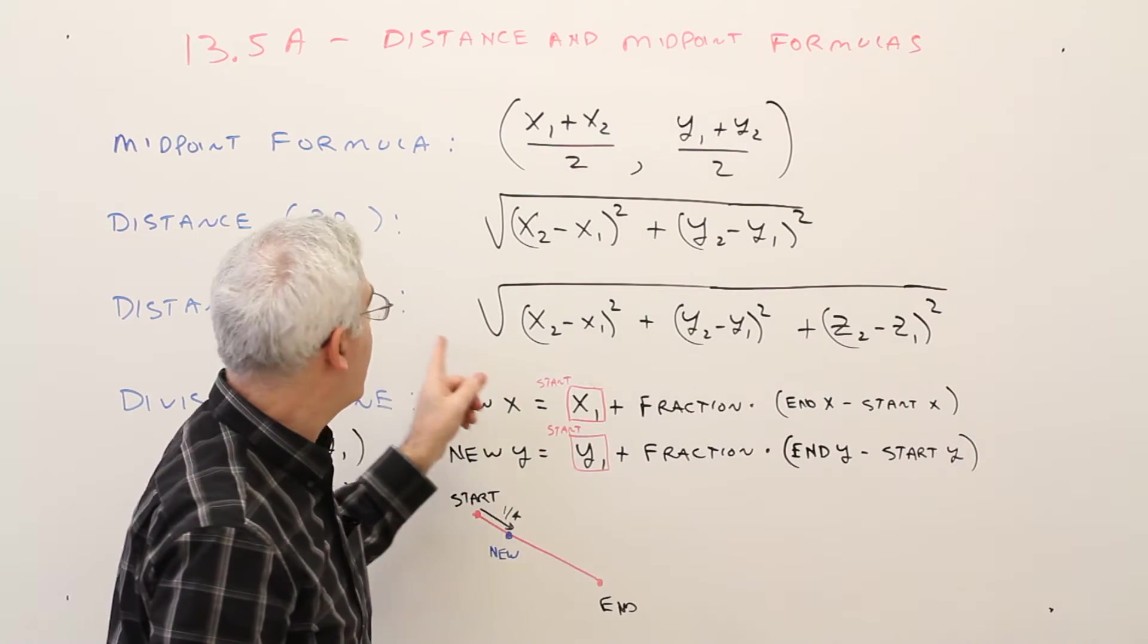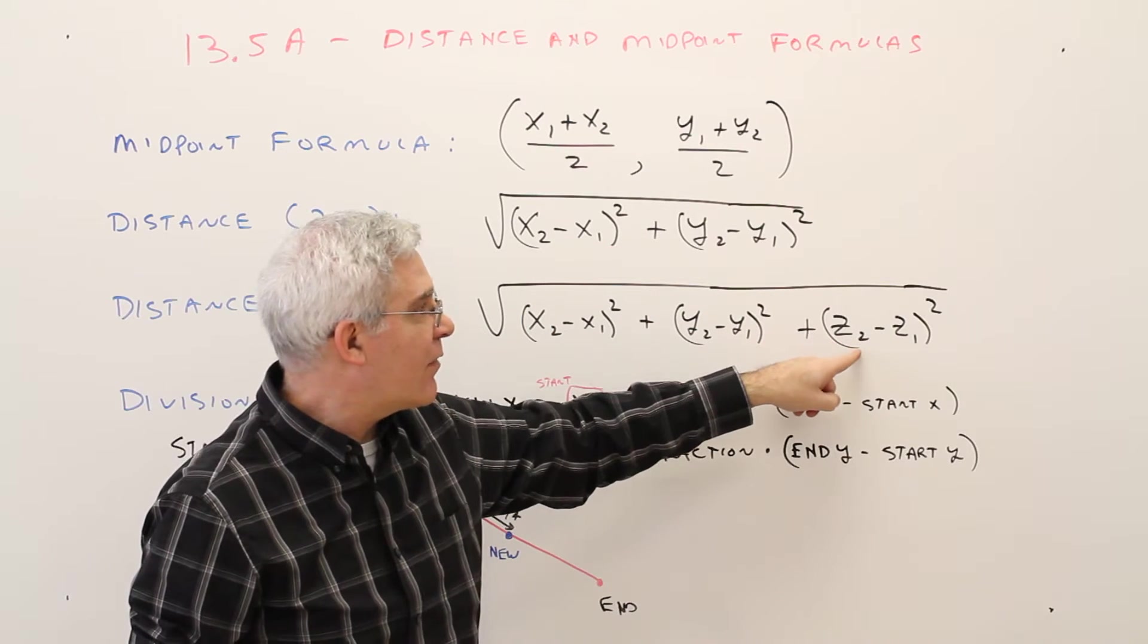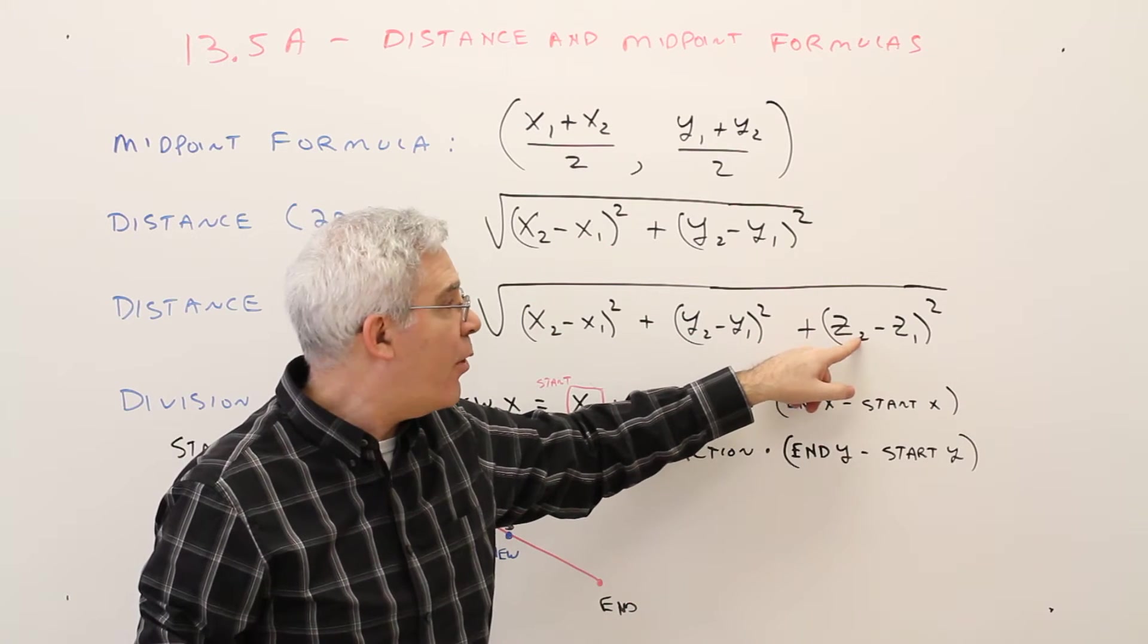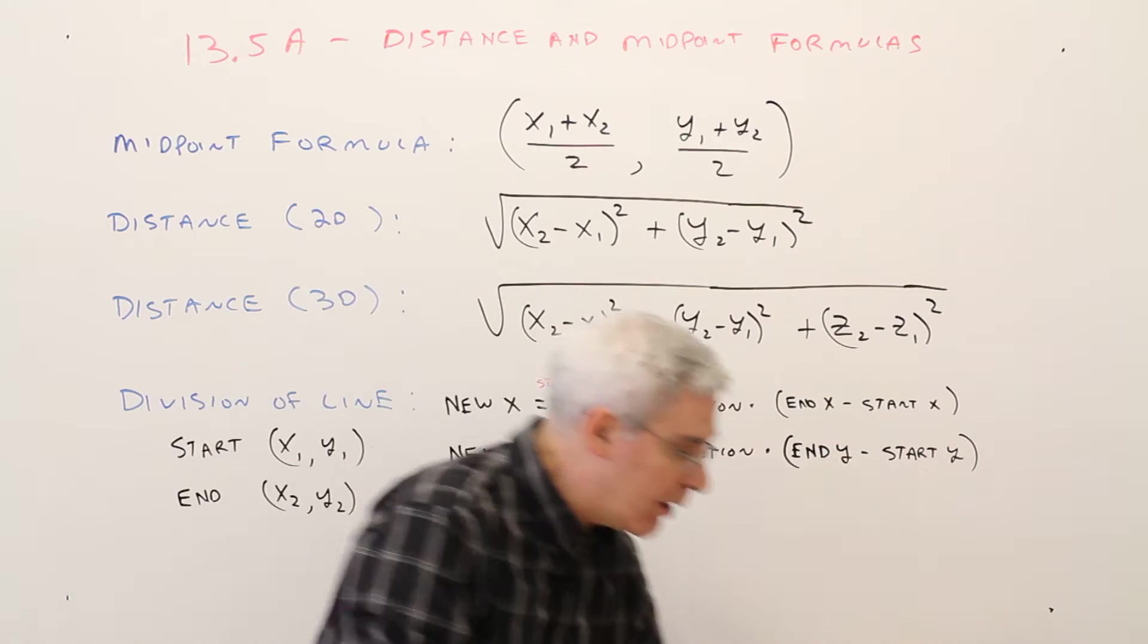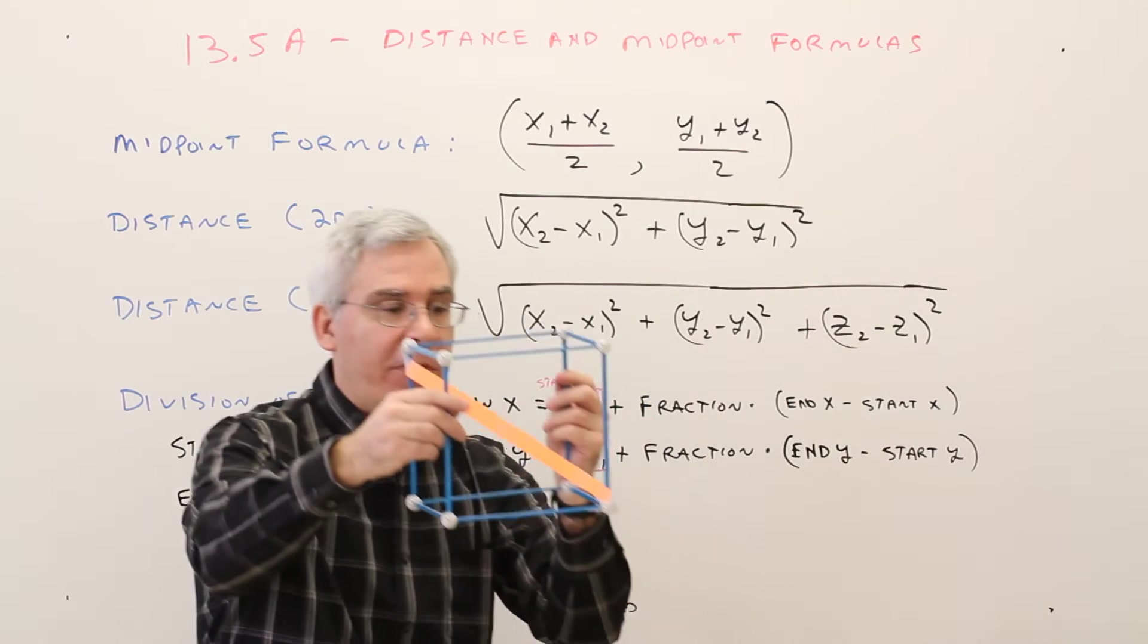So in three dimensions, it's just like two dimensions, except we add that third component, the z2 minus z1.